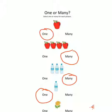Next one — last one is flowers. How many flowers here? One. So circle one.